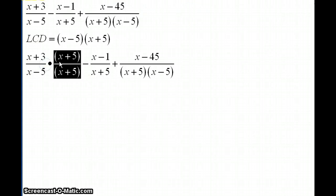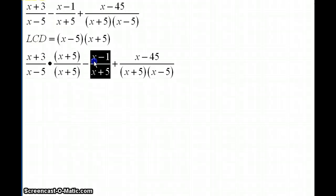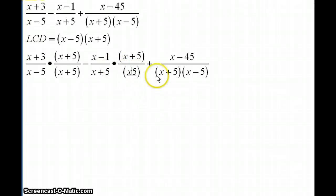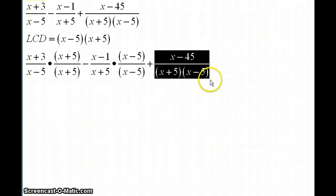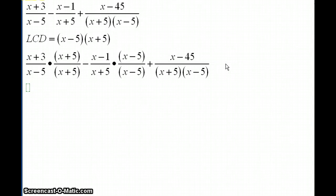And I'm going to do something similar for the next rational expression, this fraction here. I have X plus 5 but I want to have denominator X minus 5 times X plus 5. So I'm going to multiply the top and the bottom by X minus 5. Now when I go to the third rational expression, the third fraction, I already have the denominator, the common denominator. So I don't need to do anything to it. The next thing I'm going to do is I'm going to start simplifying.